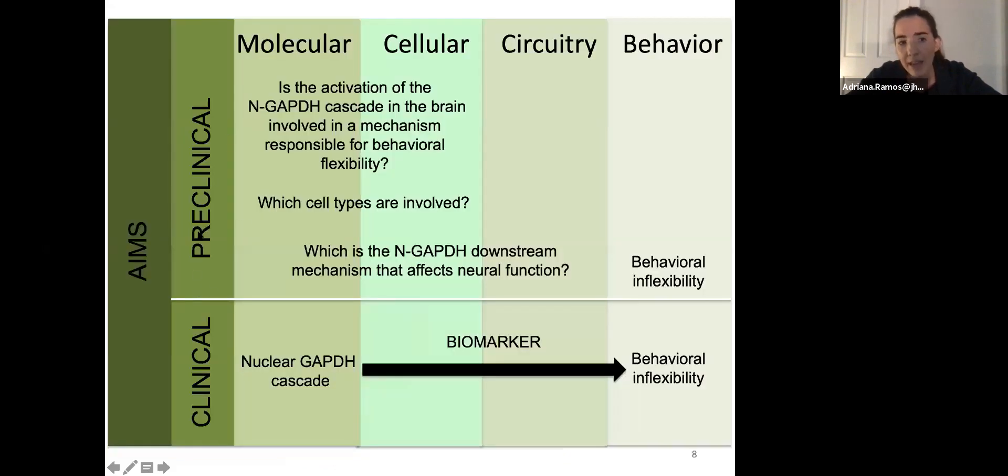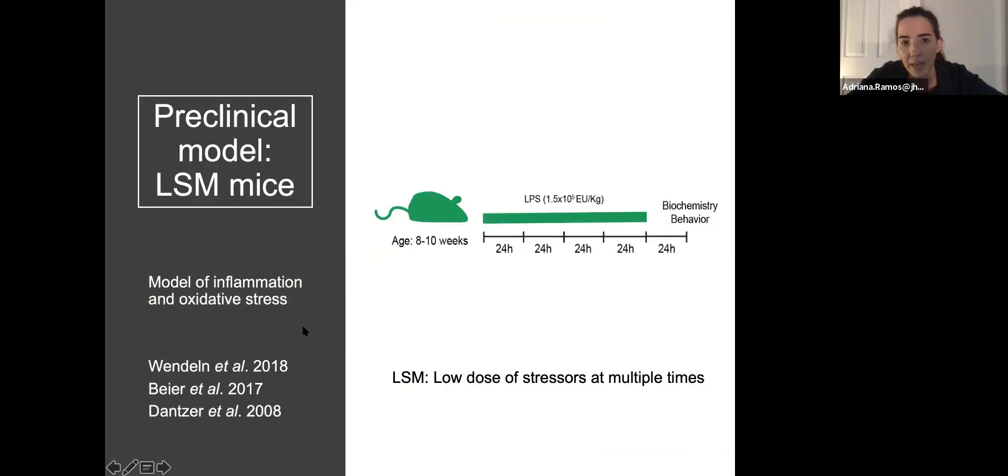These are the main aims of this study. For today, I will just focus on the preclinical aim in which we are trying to see if the nuclear GAPDH cascade can regulate behavioral flexibility. On the clinical side, we are trying to propose biomarkers that allow us to predict behavioral inflexibility in the clinic based on what we learn on the preclinical side. But as I told you, for today I will focus on the preclinical aim.